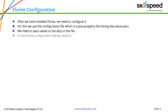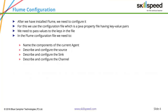In a typical Flume configuration scenario, we first have to name the components of the current agent. An agent will have a source, sink, and channel, so we have to give a name for each. Then we have to describe and configure the source, sink, and channel independently — specifying the properties of the source, what type of source we are using. Then we describe and configure the sink; for example, if it is the HDFS sink, we specify in which location the data should be stored.